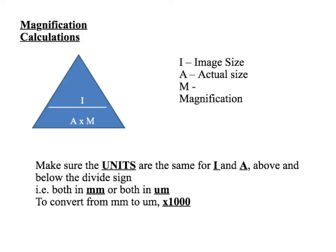Something really important before you do any of the calculations is to make sure the units are the same for the image and the actual size — make sure the units are the same above and below. Otherwise, if you've been asked to calculate the actual size in micrometres, it would be best to convert your image size into micrometres first. To do this, you need to times your millimetres image size by 1000. This is perhaps the biggest source of error — the not-converting bit.